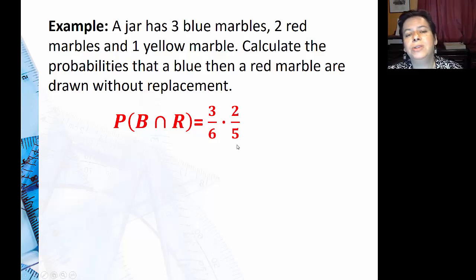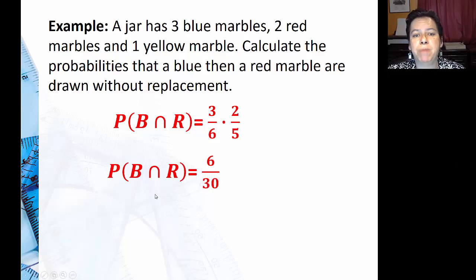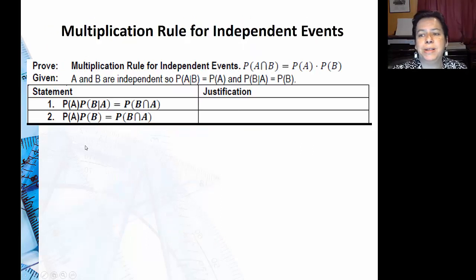Now some of you may be tempted to say 'oh I just go down by one every time on the totals.' You probably do. The only reason this goes down one is because I had two to start. If I had said blue and then yellow, that two would be a one. So don't just automatically go down by one. Then I'll just multiply my probabilities and simplify, and I have a one in five probability.